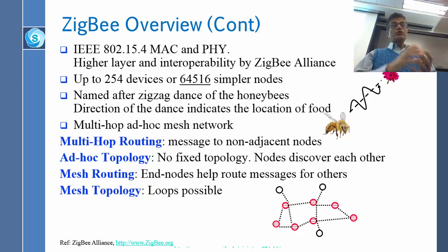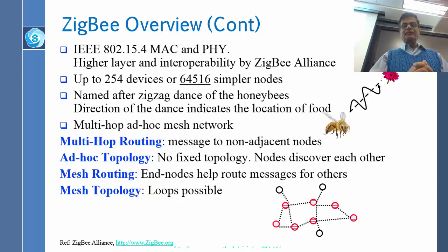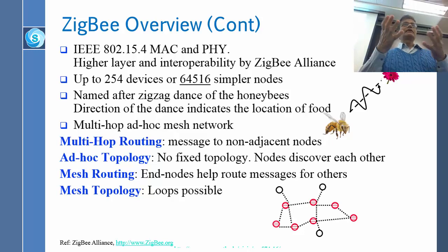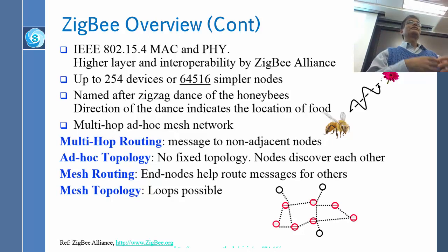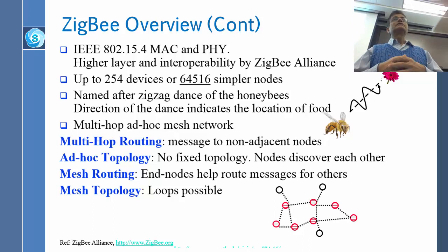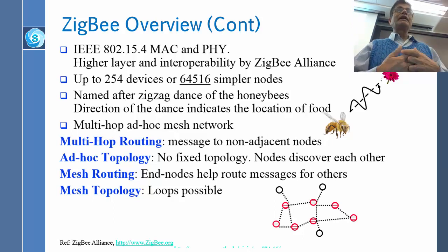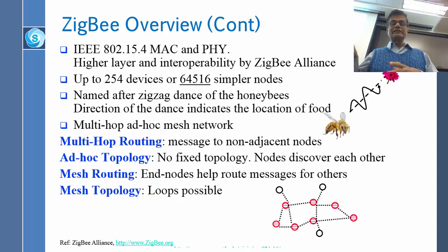Zigbee uses 802.15.4, which is why the MAC and PHY layers were described first. There is a group called the Zigbee Alliance — a group of companies that got together and said, how do we use 15.4? Just like the Wi-Fi Alliance. Zigbee Alliance products are certified as Zigbee compliant, and they decided the rest of the protocol.